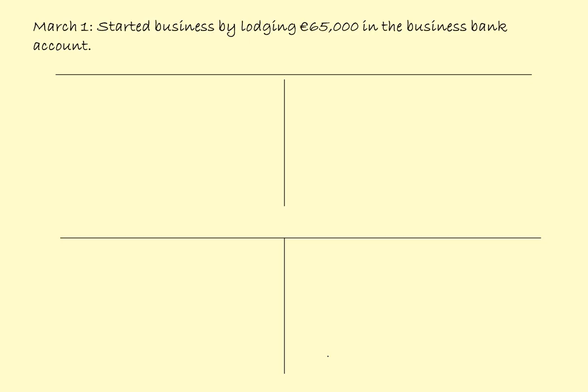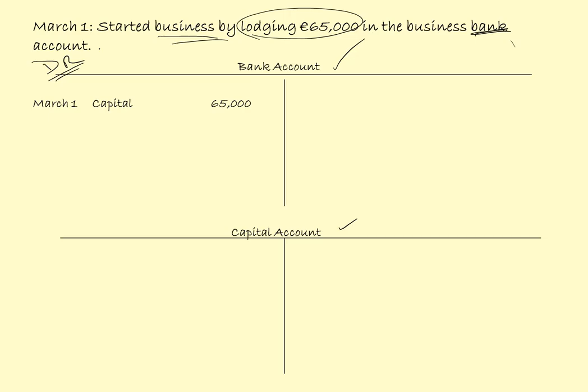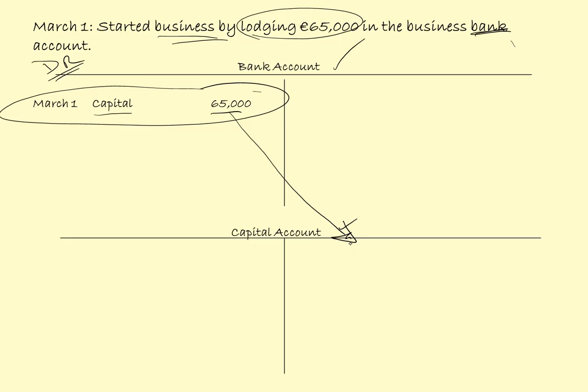Looking at the first transaction: March the 1st, start a business by lodging 65,000 in the business bank account. So Mary is starting the business lodging 65,000. The money is coming from Mary — that is referred to as capital — and it is going into the bank account. So we need two accounts: a bank account and a capital account. Money going into the bank, we put it on the debit side: March the 1st, Capital, 65,000. And that is double entered onto the credit side of the capital account: March the 1st, Bank, 65,000.